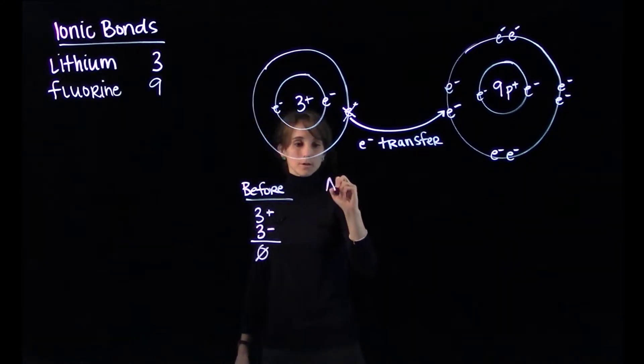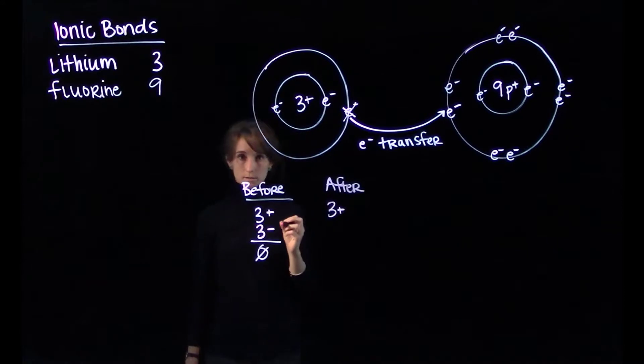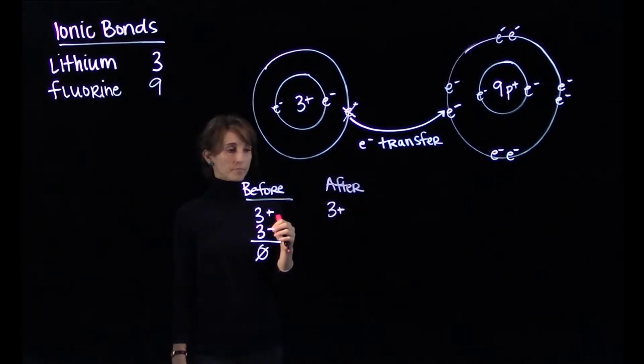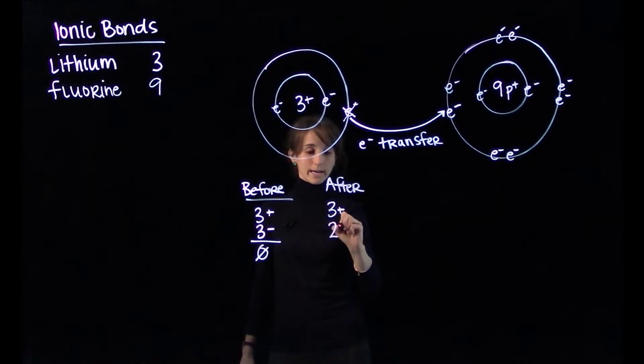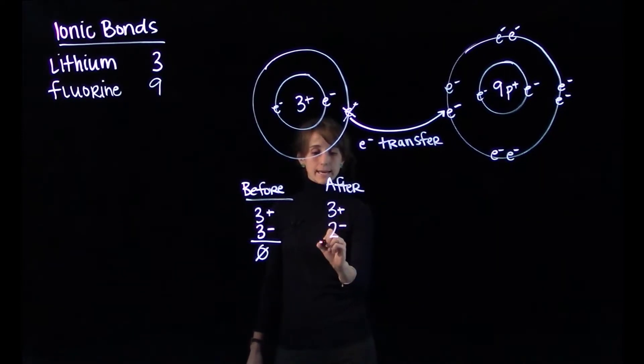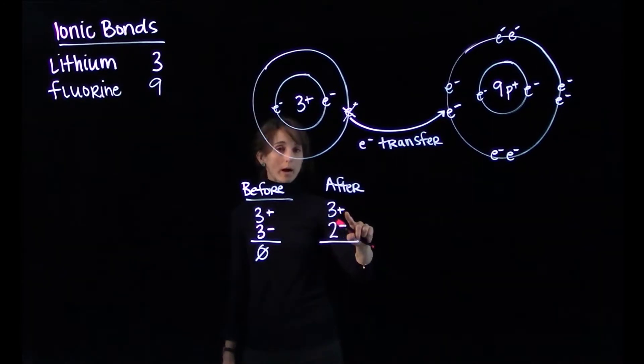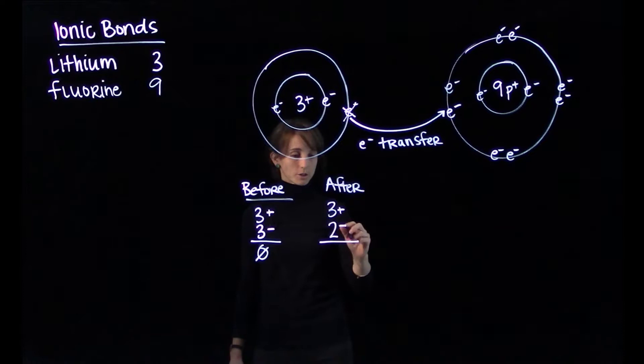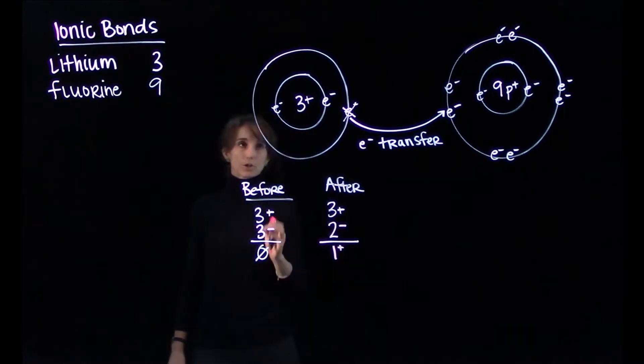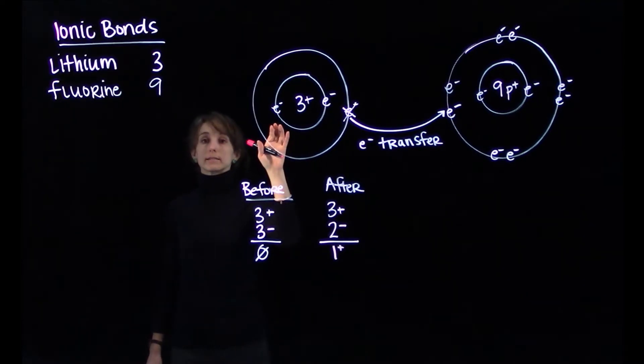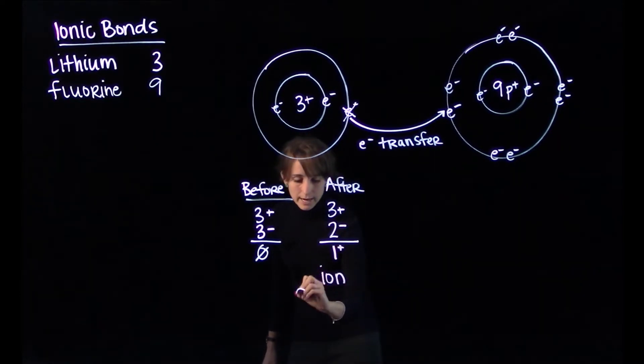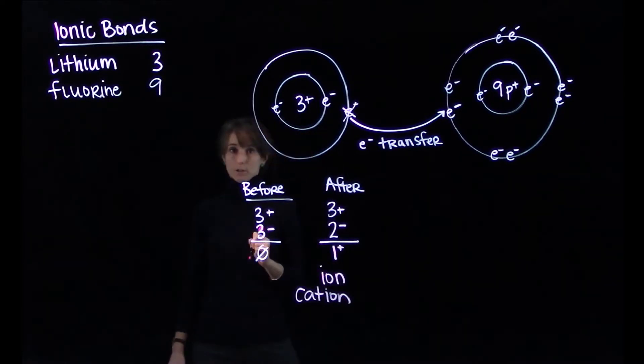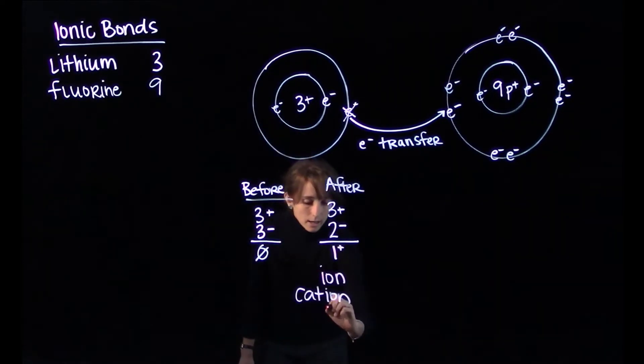After the transfer, the atom still has three protons. It must have three protons if it's still an atom of lithium. Now that one of those electrons has been transferred, there are only two electrons remaining. So we have two negatively charged subatomic particles. And now the charge of the atom is imbalanced. We have three positive charges, two negative charges, which gives us one leftover positive charge. So this lithium atom now is called an ion, which means charged particle. And more specifically, lithium is a cation because it is a positively charged particle. So the way we would write that now is Li plus.